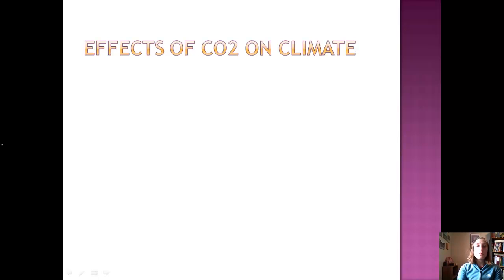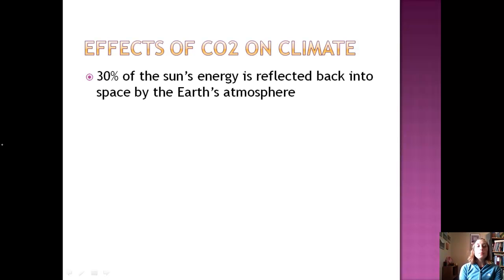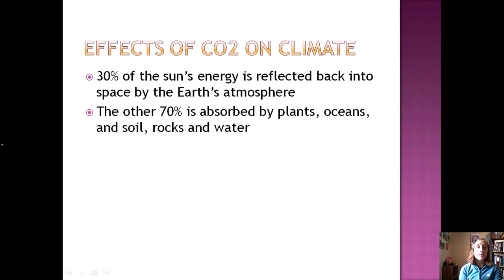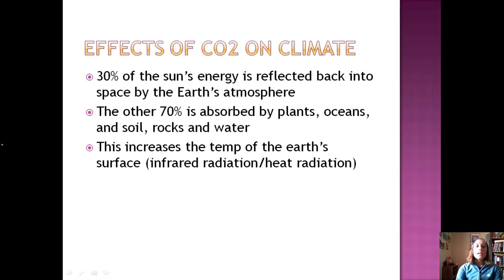Because a lot of these fossil fuels produce CO2 as a byproduct, let's look at how CO2 affects the climate. 30% of the sun's energy gets reflected back into space by the Earth's atmosphere. But the other 70% gets absorbed by plants, a lot by the ocean because it's huge, soil, rocks, water, things like that. Because it's absorbing this heat, the temperature of Earth's surface is increasing, and this is through infrared radiation or heat radiation.